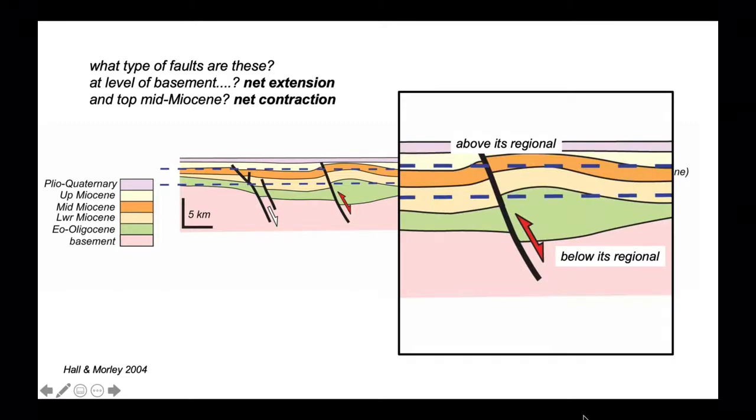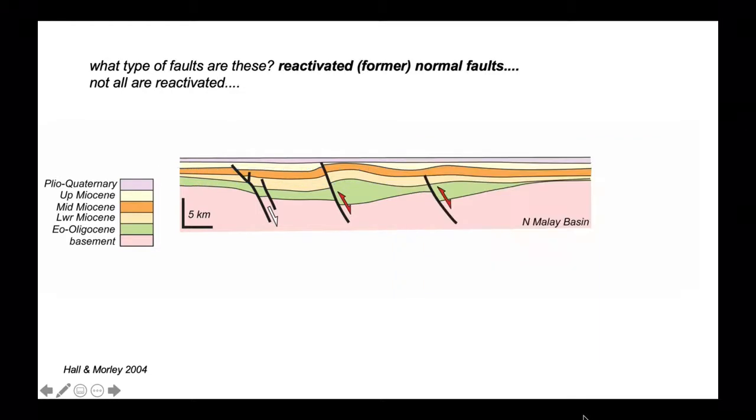Let's zoom in on one of those and emphasize the point. The top basement horizon is below its regional. The top of the middle Miocene is above its regional. So these are reactivated former normal faults. But notice that not all these faults have reactivated. The structures on the left of the profile are still in net extension.